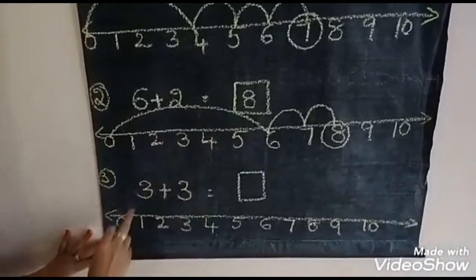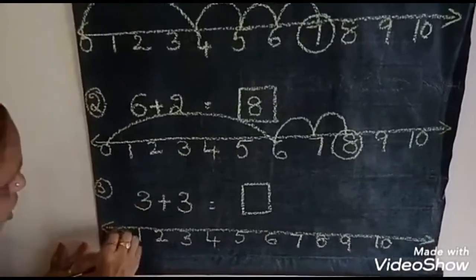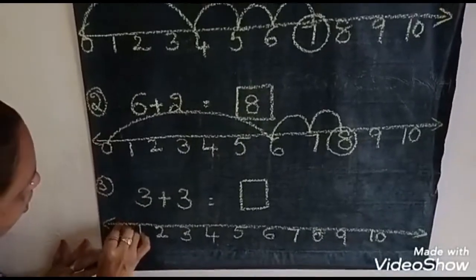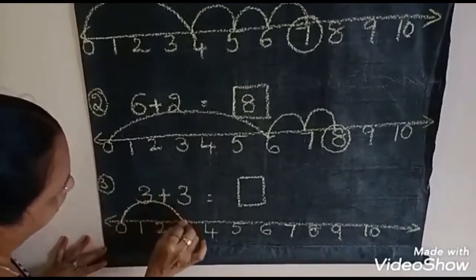Okay. Now, what number is this? 3. 3. Draw one, skip. 0 to 3.